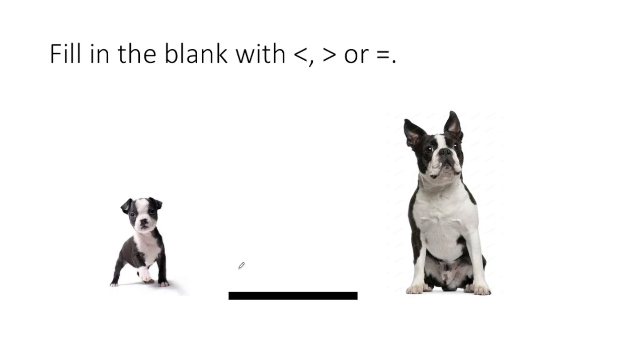Right, the puppy size is less than the doggy size. Once we know the words, then we can choose the symbol. Remember, less starts with an L, so we put in the symbol that looks like a kind of sideways, crooked L, less than.